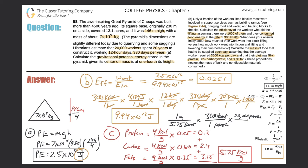So we get a value of about 1.25 times 10 to the 7 grams — that's about 12.5 million grams, or about 12,000 kilograms per day of food. That is a lot of food — a lot of mass.